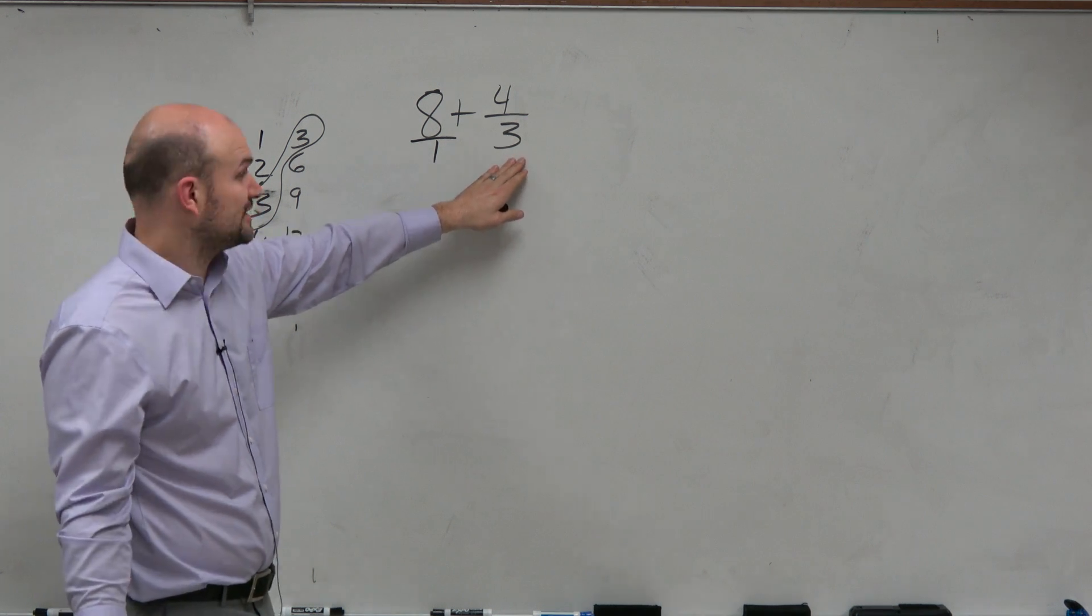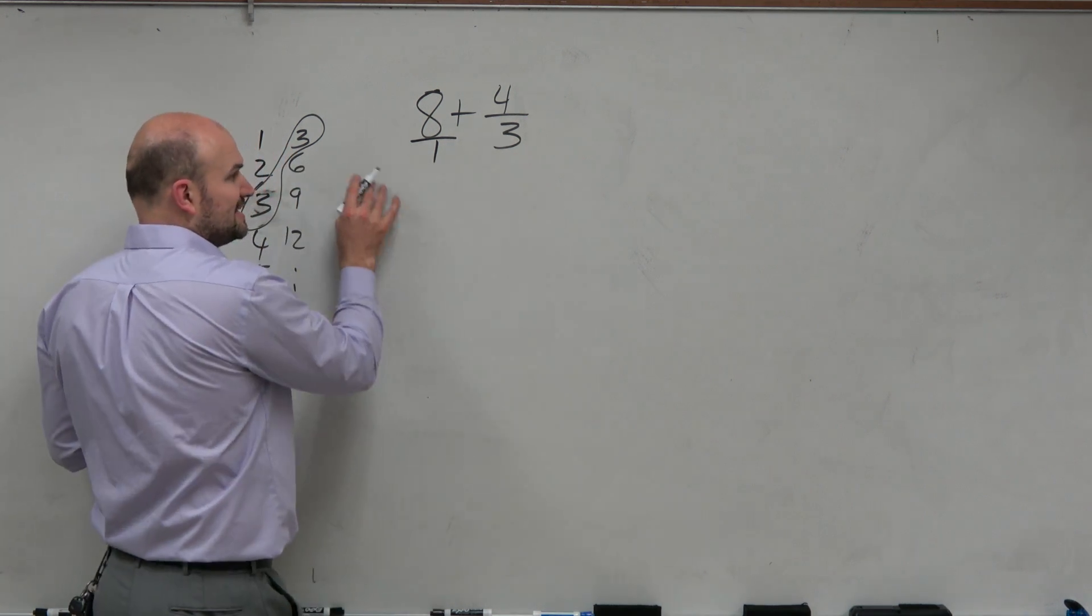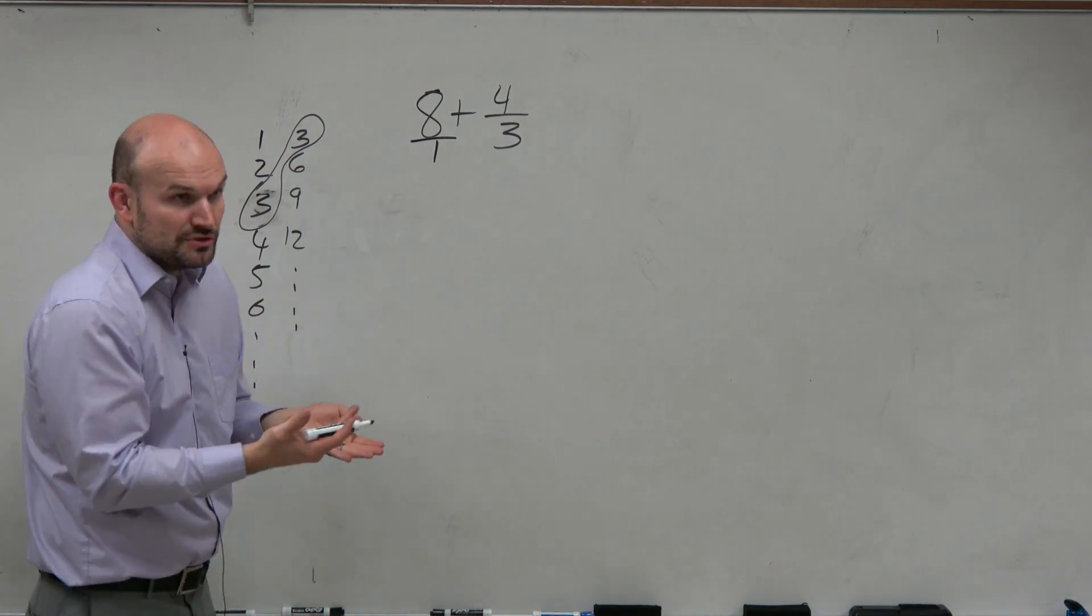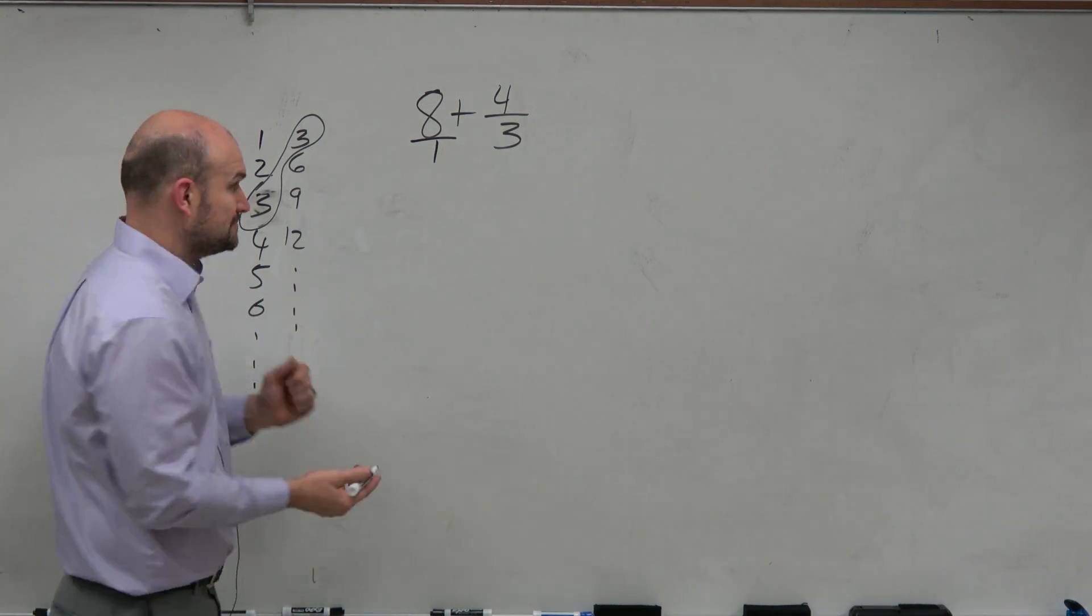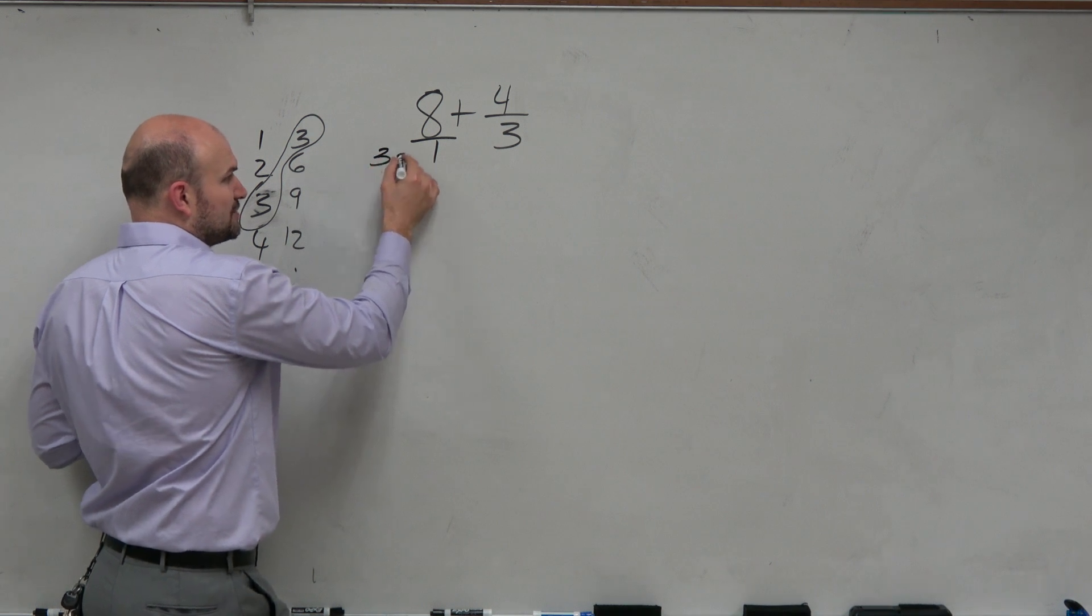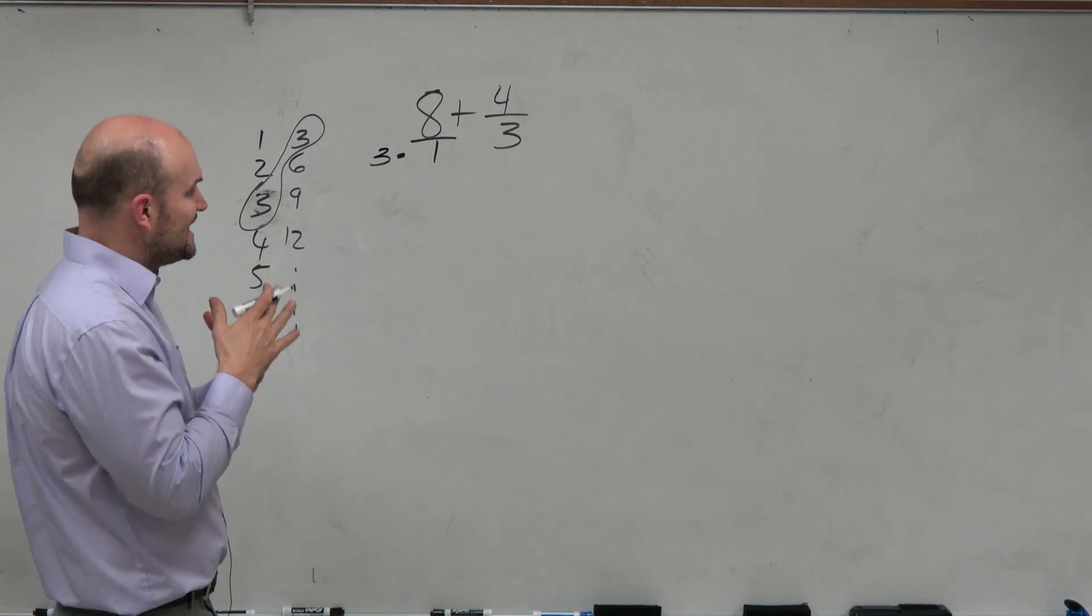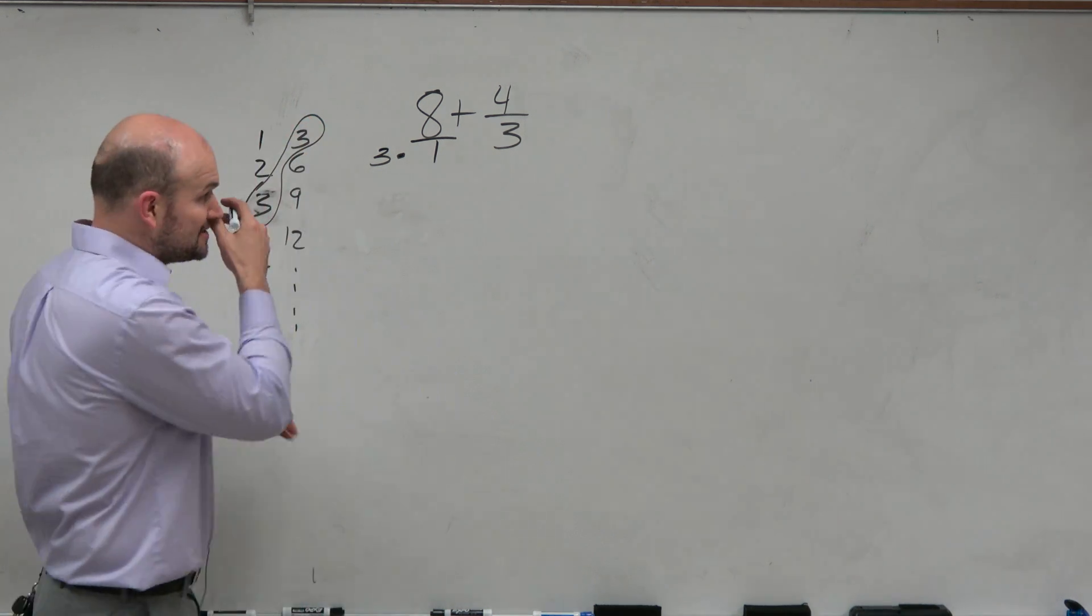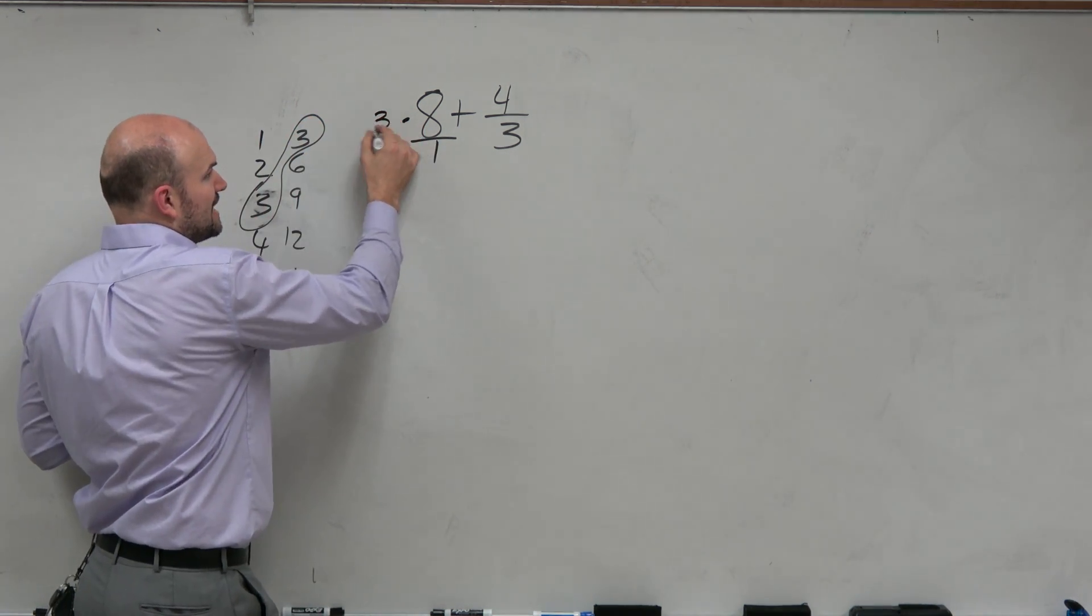Now, this denominator is already 3, so there's nothing we need to do there. But here, we need to get this to be 3. So there's really two ways we could look at this. We could add 2 to it, or we could multiply by 3. Well, the correct operation is going to be multiplication. Because what that's going to do is that's going to produce an equivalent fraction only if we also multiply by 3 up top.